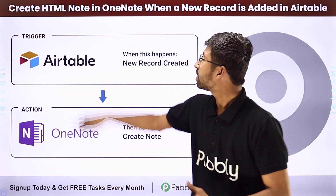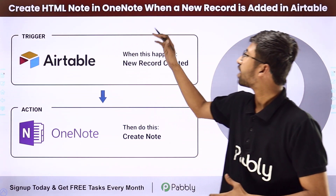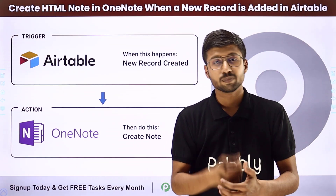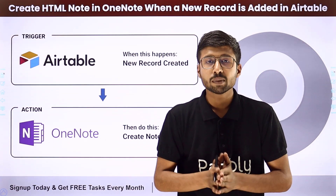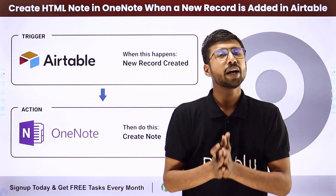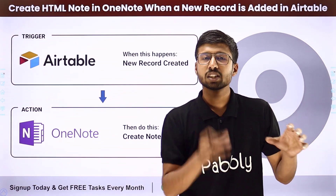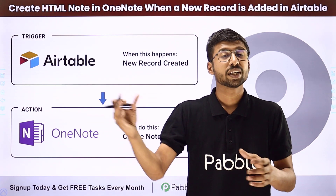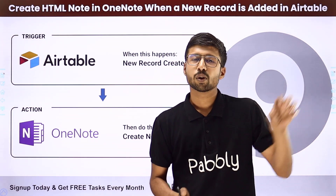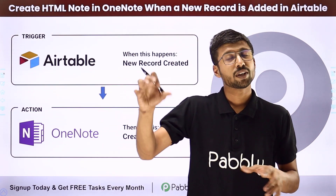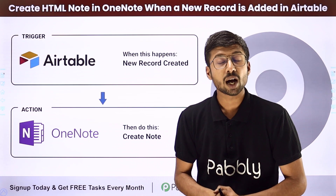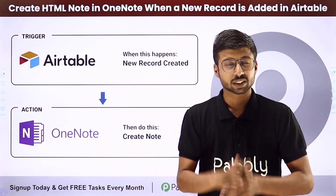In this video we are going to learn how to create an HTML note in OneNote when a new record is added in AITable. Suppose you and your team members are using AITable to enter some important details, and you want a OneNote note to be created automatically with those same details. The manual process of getting details from AITable and creating a note in OneNote can be very repetitive and time-consuming, so in this video I'm going to show you how to automate this.